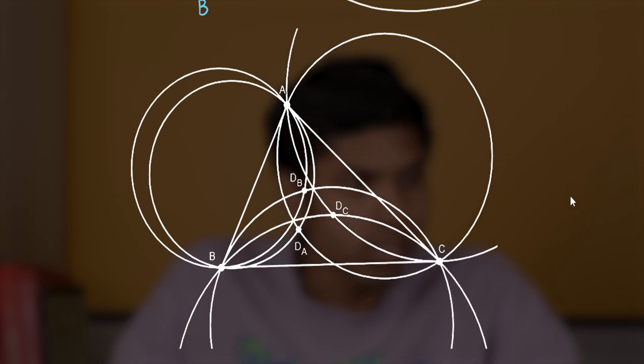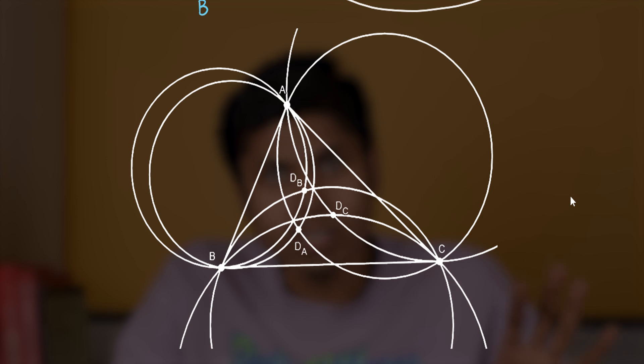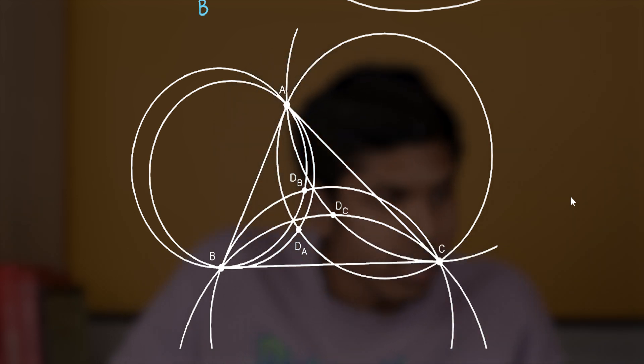You can see that totally six circles are constructed here to define these points D_A, D_B, D_C. And, notice that these circles are also the exact same circles defined in Humpty Point. But, we consider the intersection of circles tangent at A to form D_A.